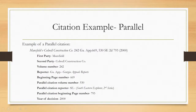If the case or judicial opinion is published by additional publishers, parallel citations may follow the main one. In this example of a parallel citation, we see listings for the first party, second party, volume number, reporter, and beginning page number.